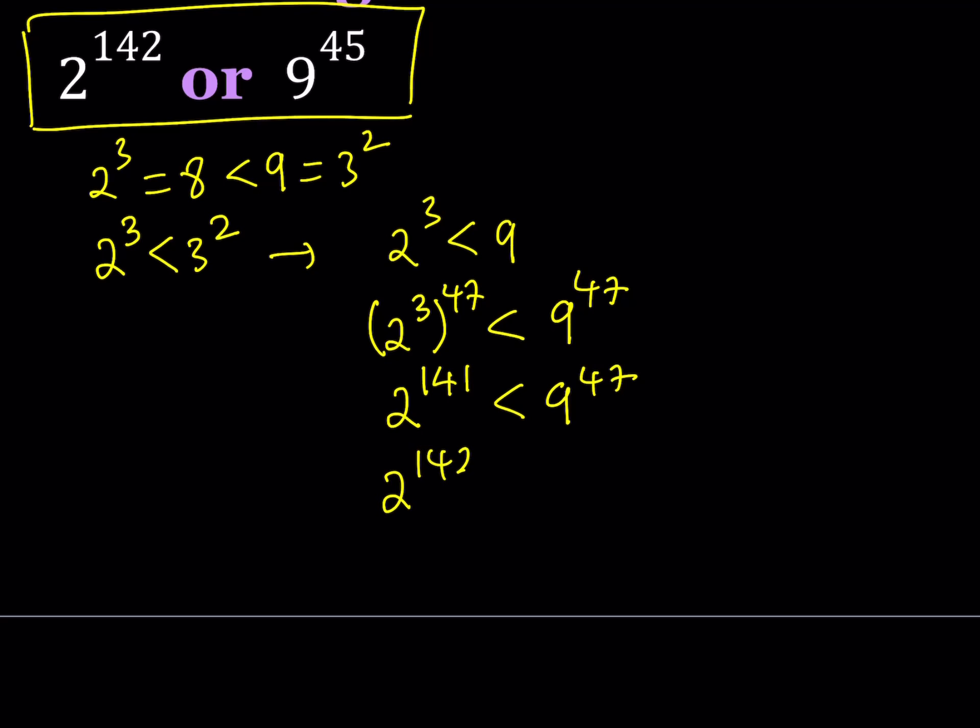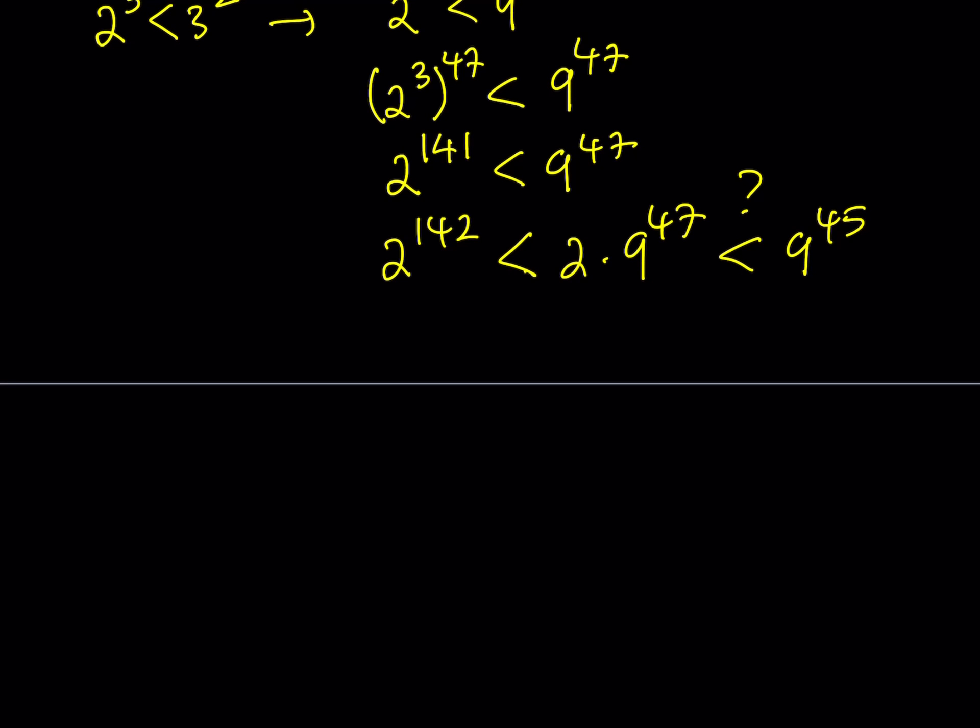Now, this is kind of close to what we're trying to get. Our original problem gives us 2 to the power of 142 and 9 to the 45. So in this case, it might make sense to multiply both sides by 2 because I want to get to 2 to the power of 142. But it would be nice if this expression was less than 9 to the power of 45. Unfortunately, that's not true. Even 9 to the power of 47 is greater than 9 to the power of 45, and if you multiply that by 2, it's going to be even greater. So this inequality is not going to work.